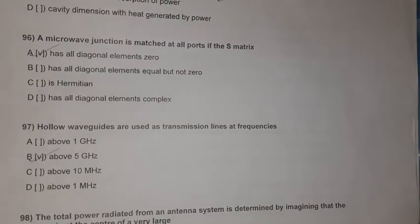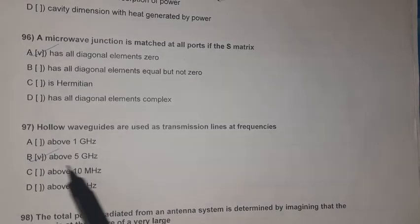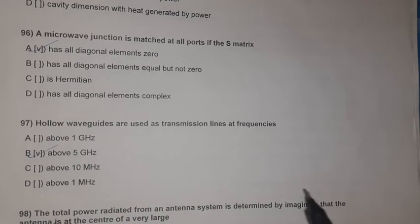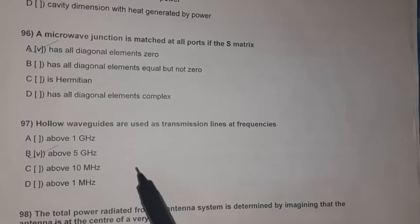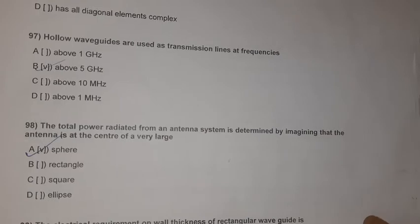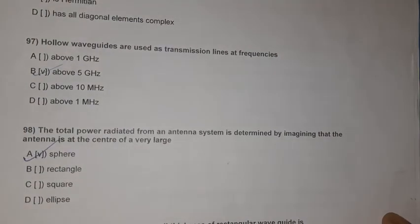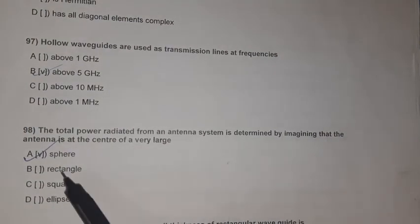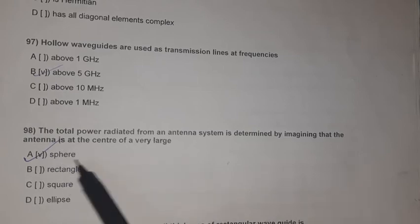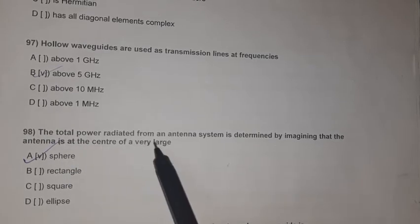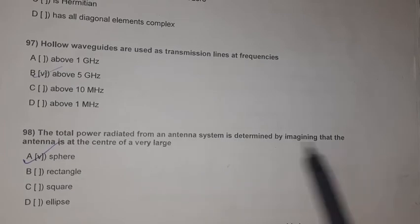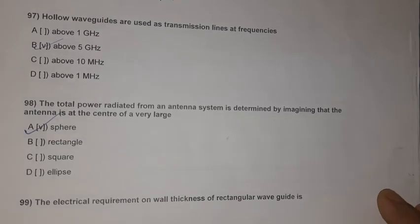Question 94: A microwave junction is matched at all ports if the S-matrix has all diagonal elements equal to zero. Question 95: Hollow waveguides are used as transmission lines at frequencies above 5 GHz. Question 96: The total power radiated from an antenna is determined by imagining the antenna is at the center of a very large sphere.